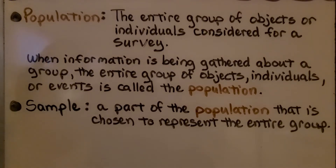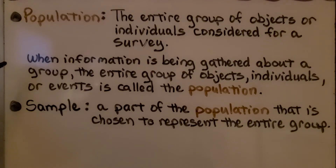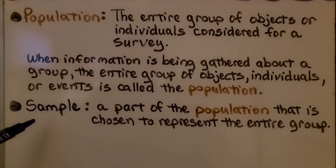Population — that's the entire group of objects or individuals considered for a survey. When information is being gathered about a group, the entire group of objects, individuals, or events is called the population. A sample is a part of the population that is chosen to represent the entire group.